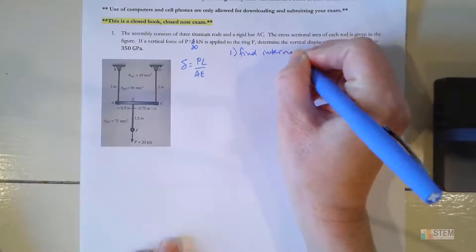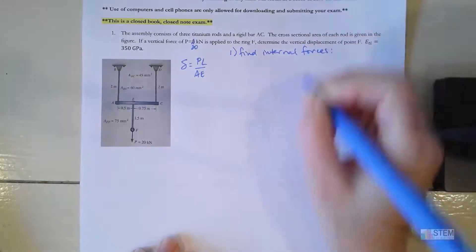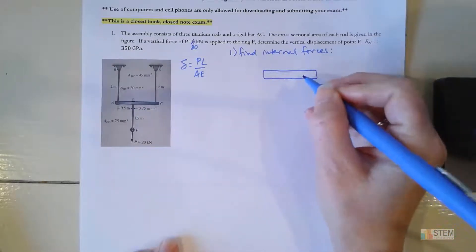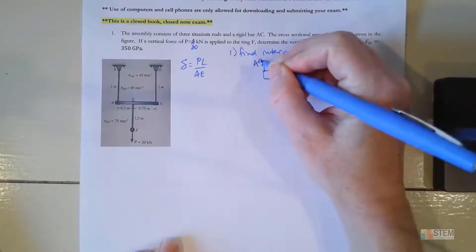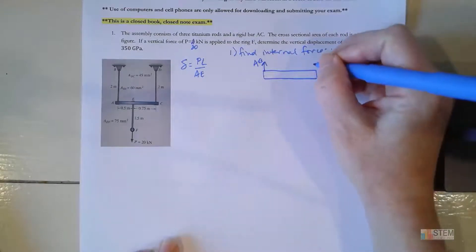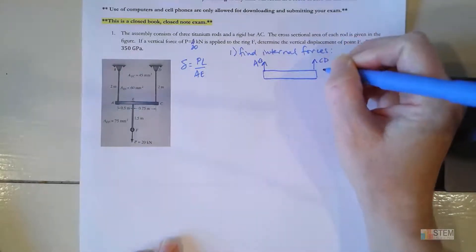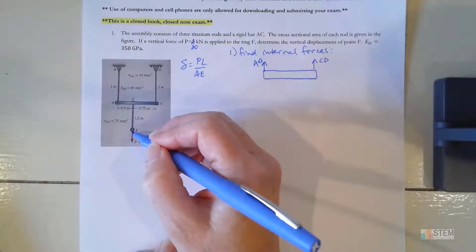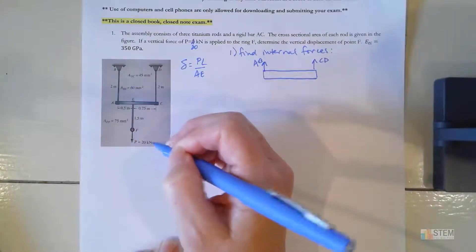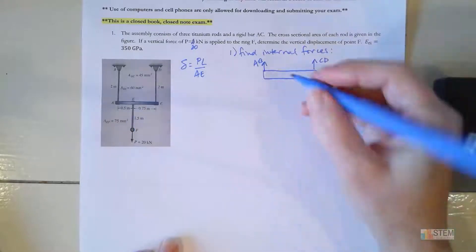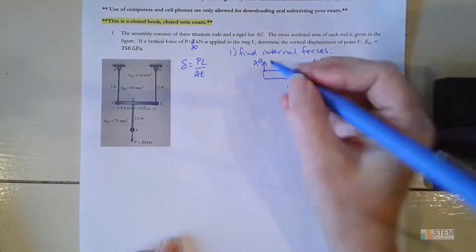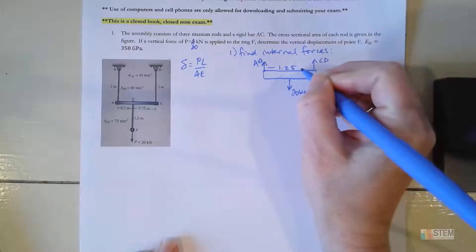Step one: let's do a free body diagram of the rigid bar AC. The force in rod AB, let's call it AB. Over on the right side, let's call that one CD. And then the rod hanging off the bottom, EF — if I section that and do the free body diagram, the internal force there is 20 kilonewtons, since that's the only force acting there. The distance is 1.25 meters total, with 0.5 on this side and 0.75 on the other.